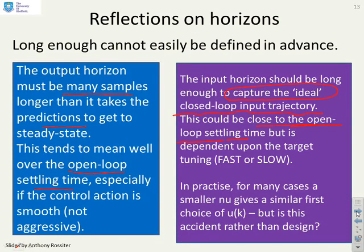In practice, and this is a bit of a note, you may find that smaller values of nu often give you a similar first choice for u and so your control loop gives you similar behaviour with a larger nu and a smaller nu. But my particular point is that you're getting this by accident not by design and therefore there could be unseen dangers in using a low nu.